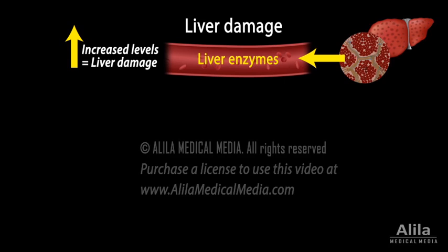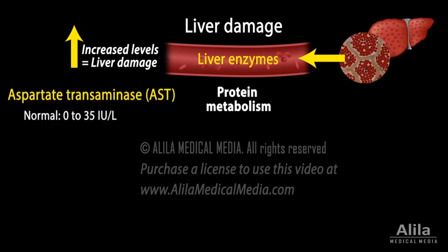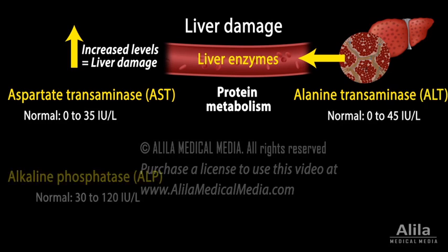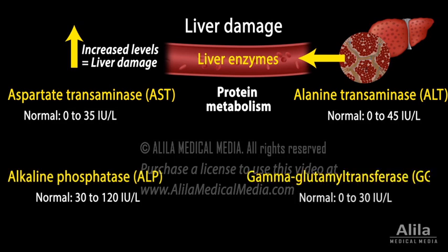Four enzymes are usually included in a hepatic panel, two of which are involved in protein metabolism: aspartate transaminase, AST, and alanine transaminase, ALT. The other two — alkaline phosphatase, ALP, and gamma-glutamyl transferase, GGT — are components of bile ducts and involved in bile secretion.